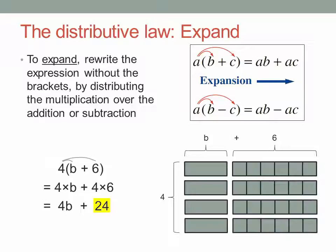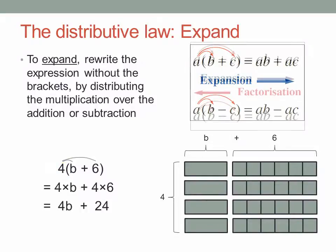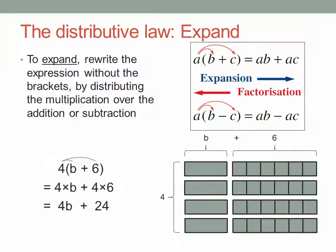Because if we can do that, write 24 as 4 times something, then we'll have a common factor of 4. And that means we can rewrite the expression as 4 times another factor, in this case, b plus 6. This process is called factorizing, because we're taking out a common factor. We're rewriting a sum as a product of factors.